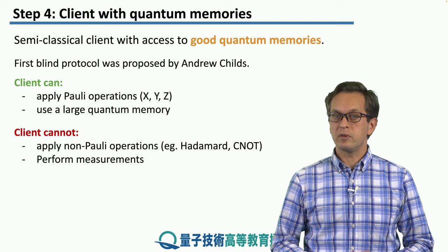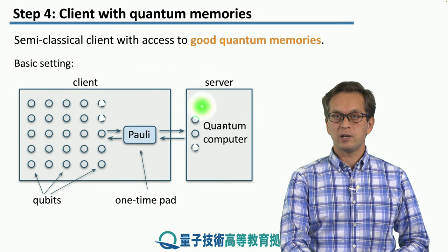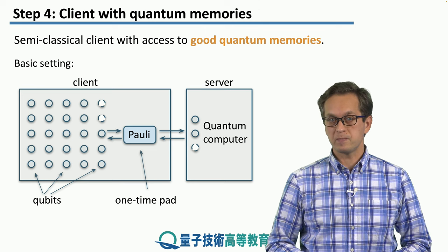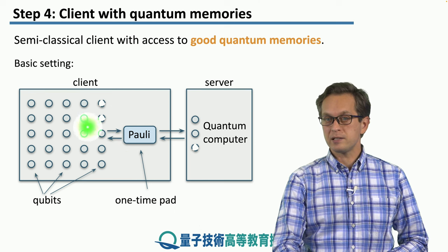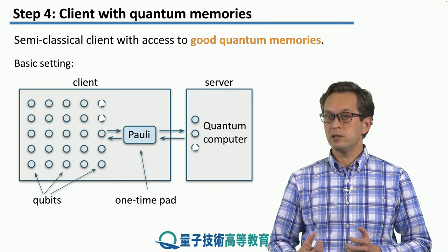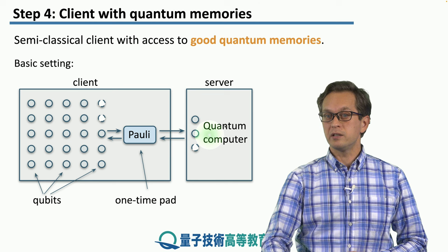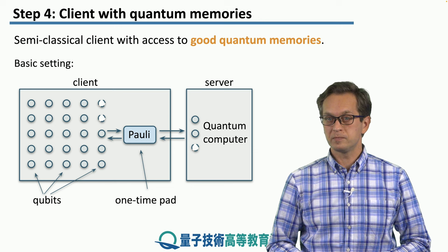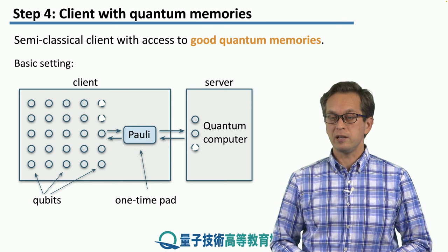And also the client is prevented from performing measurements. This is the basic setting. We've got a client over here, and all the circles represent quantum bits, qubits stored in quantum memories. And over here is the one-time pad machine. The client sends the qubit through the one-time pad, applying a random Pauli operation to the server. The server then stores this qubit and applies the instructed operation, then returns the qubit, which is decoded by the one-time pad machine and stored again in the client's memory.